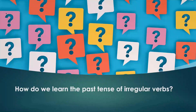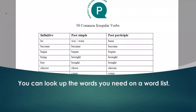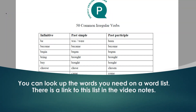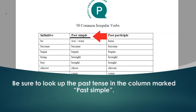So how do we learn the past tense of irregular verbs? You can look up the words you need on a word list. There is a link to this list in the video notes. Be sure to look up the past tense in the column marked "past simple."